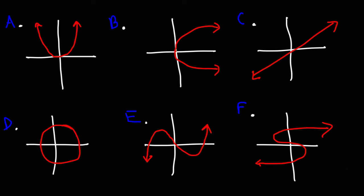Consider these six graphs. Which one represents a function and which one does not? Go ahead and identify each one. So how can we tell if a graph is a function or not? There is something called a vertical line test. If you draw a vertical line and it touches the graph at one point, it's a function. If it touches it at two or more points, then it is not a function.